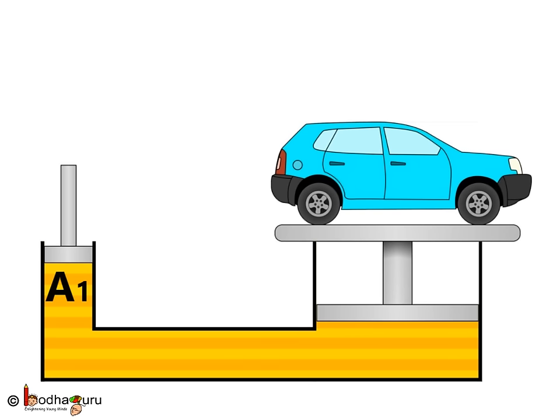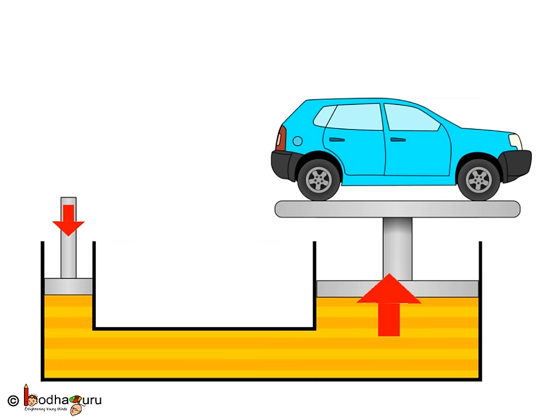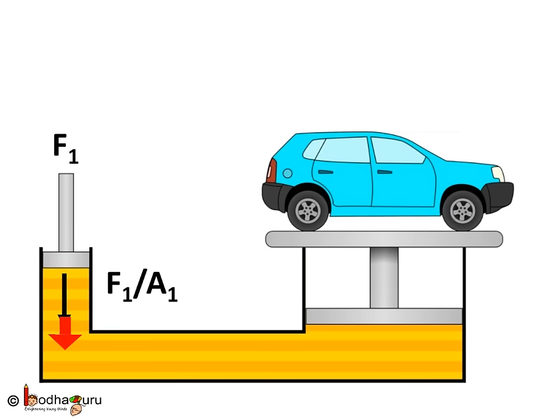Now, the cross-section of A1 is small, so we can generate greater amount of pressure easily by applying a moderate amount of force. Now, this pressure will transmit equally throughout the fluid and reach the larger tube.